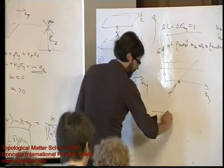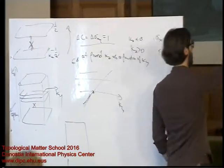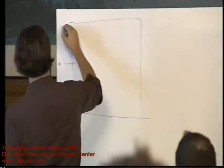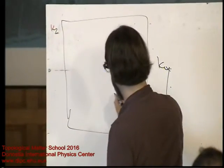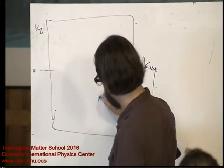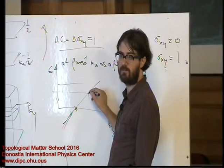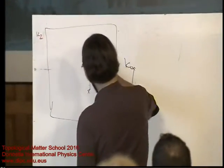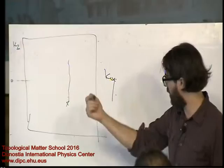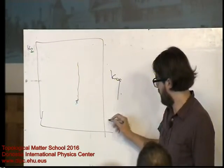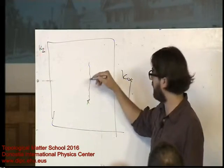In the surface Brillouin zone — which is kz and ky — the Weyl node sits at some kz. The moment I go away from the Weyl node with open boundary conditions, I have a Fermi point at every kz above the node. Below the Weyl node I have no chiral mode; above the Weyl node I have a chiral mode.